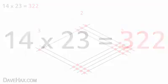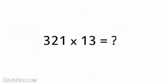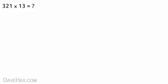14 multiplied by 23 is 322. We'll now go one step further, and look at multiplying even larger numbers. So the first number we have now is a 3 digit number.